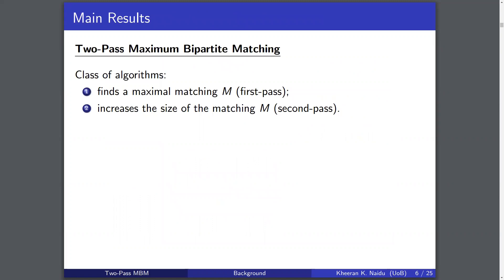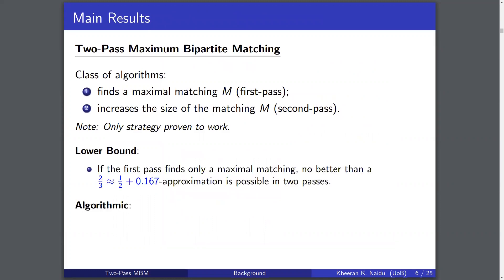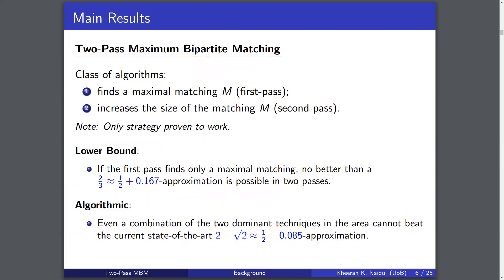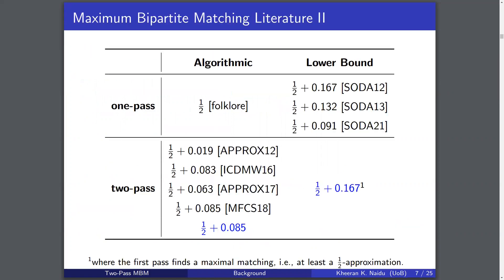We focus on the two-pass setting and specifically on the aforementioned class of algorithms, which is the only strategy proven to work. On the lower bound front, we show that using this strategy, the best we can ever do is a two-thirds approximation. On the algorithmic front, we show that even with a combination of the two dominant techniques in the area, we still can't push past the current state of the art two-minus-root-two approximation, so other strategies and techniques are required. We find a meta-algorithm that achieves exactly the current state of the art and prove the very first two-pass lower bound.